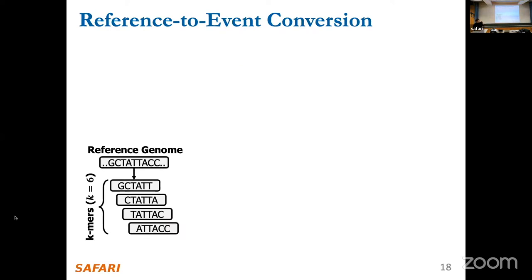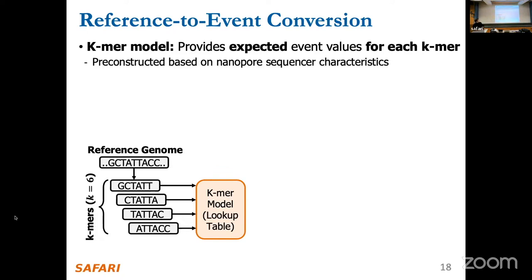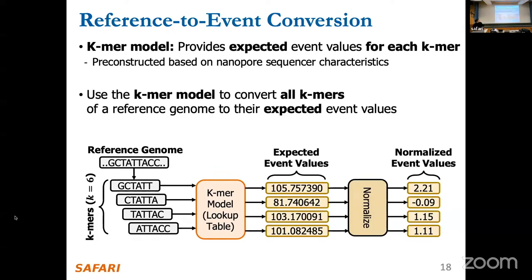How do we convert the reference genome to event values? We utilize a lookup table called the k-mer model, which provides the expected event value for each k-mer. This k-mer model is pre-constructed based on the characteristics of the nanopore sequencer. We look up each k-mer in the k-mer model to find its expected event value, then apply normalization so that these values are comparable.